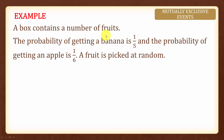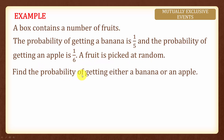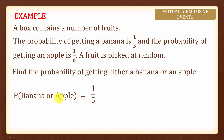Here a box contains a number of fruits. The probability of getting a banana is 1 over 5 and the probability of getting an apple is 1 over 6. A fruit is picked at random and we are asked to find the probability of getting either a banana or an apple. The probability of getting a banana, which is 1 over 5, plus the probability of getting an apple, which is 1 over 6, gives us 11 over 30.